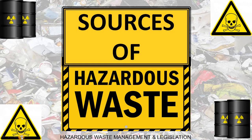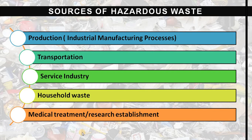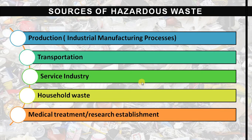Here is a list of sources of hazardous waste. The first source is production, meaning industrial manufacturing processes. The second is transportation. The third is service industries. The fourth is household waste. And the fifth, last but not least, is medical treatment or research establishments. Let us see each one in detail.